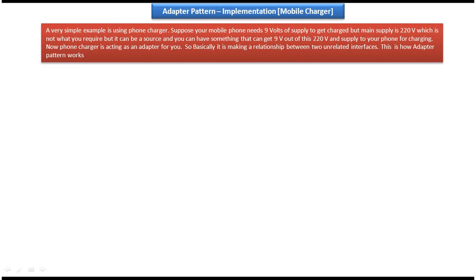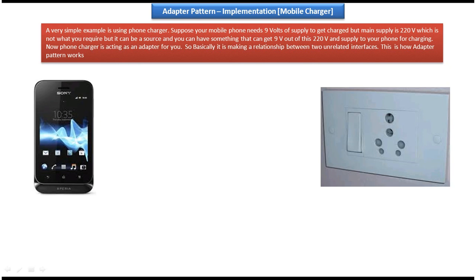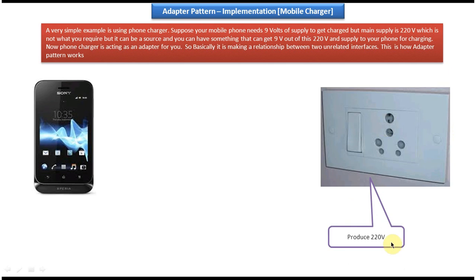Now we will see the scenario first, then I will show you the class diagram and the code related to that. On the right side you can see the electrical socket and on the left side you can see the mobile phone. This electric socket will produce 220 volts, and what this mobile phone needs is 9 volts to charge.